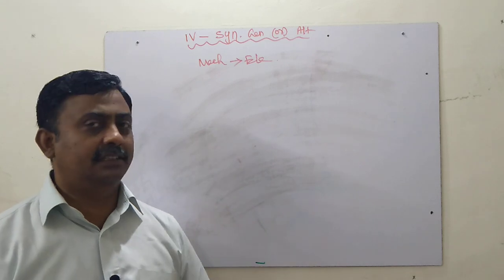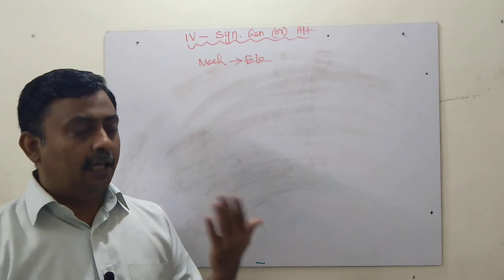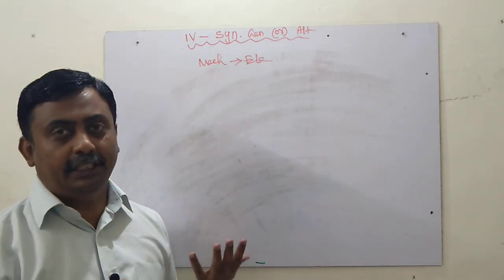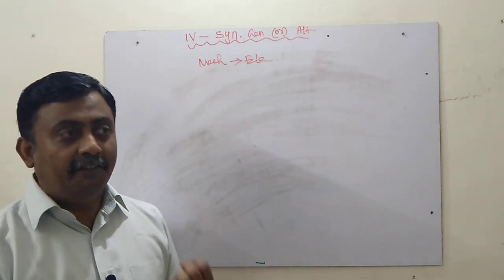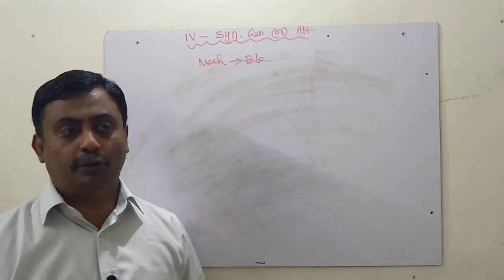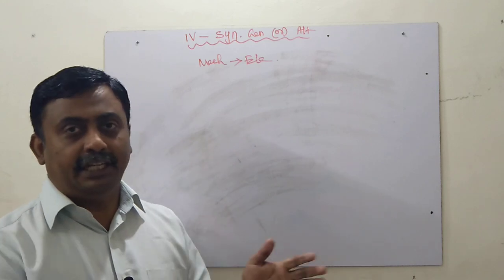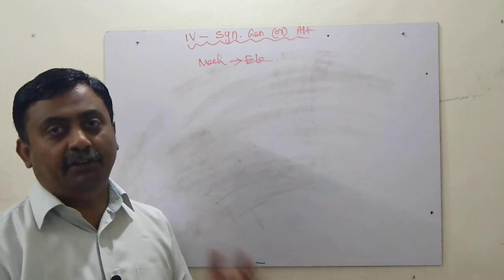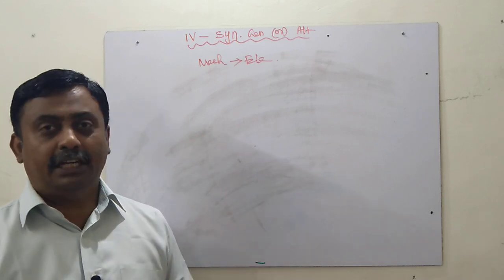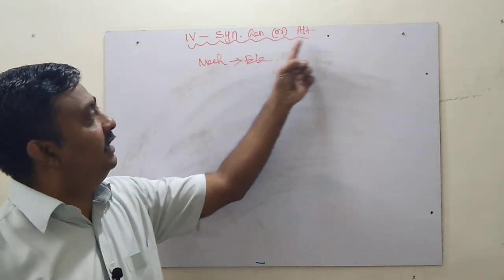Where do we use AC generators? We use these AC generators in power stations — thermal power stations, hydro power stations, and nuclear power stations — to generate bulk power. Electrical energy is consumed everywhere, and it is generated in these power stations. It is used in power plants, so it is called a synchronous generator or alternator.